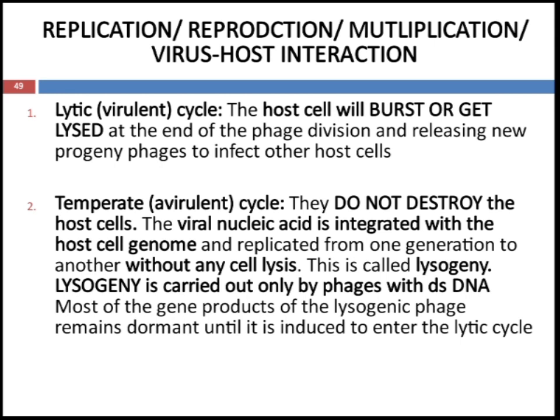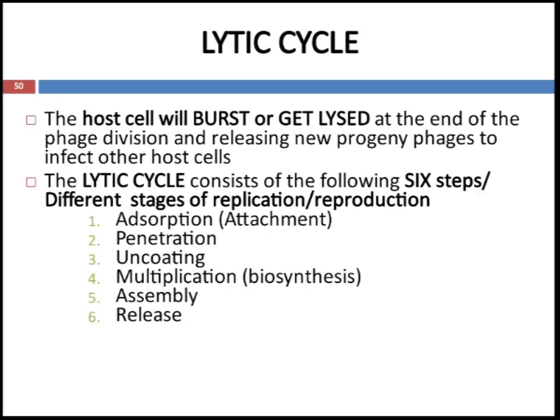Most of the gene products of lysogenic phage remain dormant until it is induced to enter the lytic cycle. In the lytic cycle, the host cell will burst or get lysed at the end of phage division, releasing new progeny phage to infect other host cells. The lytic cycle consists of different stages: adsorption or attachment, penetration, uncoating, multiplication or biosynthesis, assembly, and release.